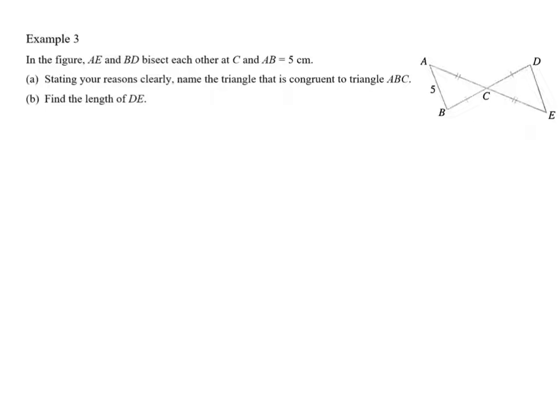Congruency example 3. In the figure over here, AE and BD bisect each other at C and AB is 5 cm. So what does that mean?